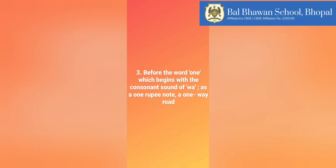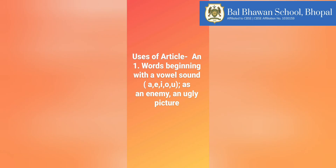Moving on to the uses of article 'an'. An is used before words beginning with a vowel or vowel sound — A, E, I, O, U are the vowels. For example: an elephant, an umbrella, an Englishman, an Indian.